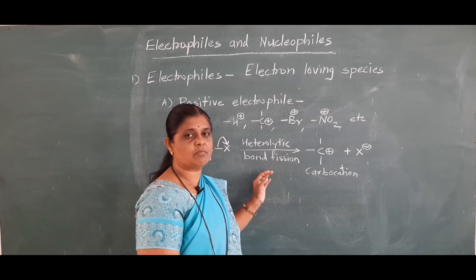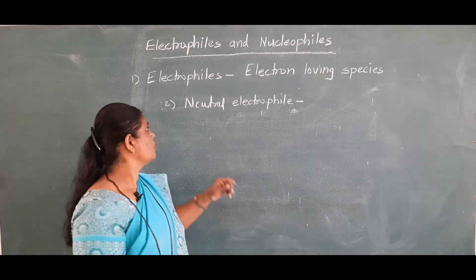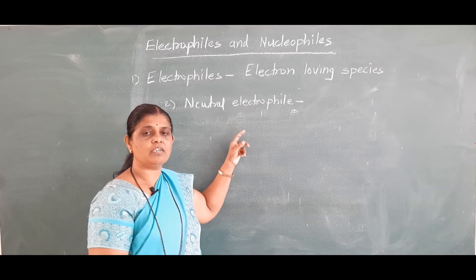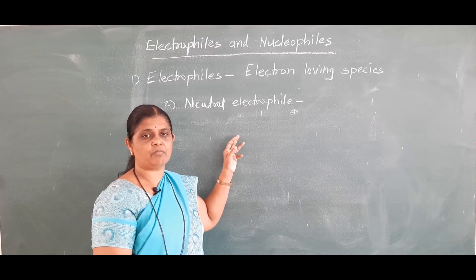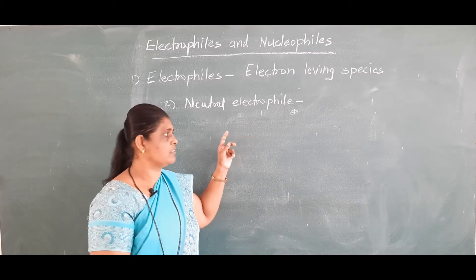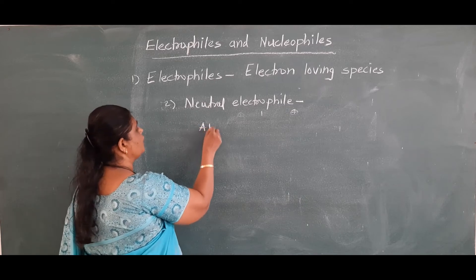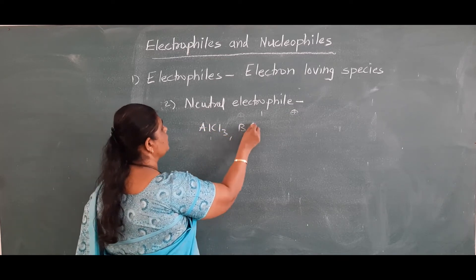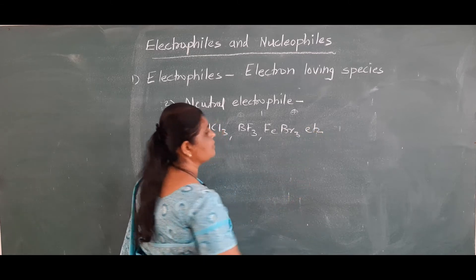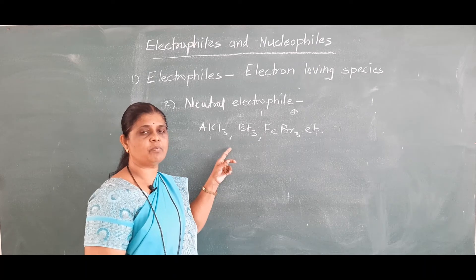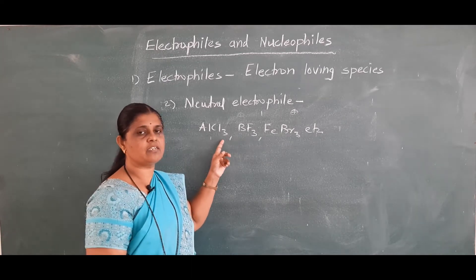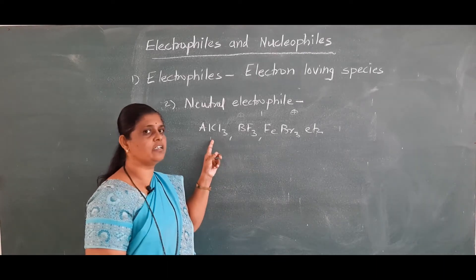Now we see what is meant by neutral electrophiles. Neutral electrophiles are electron deficient compounds. They have deficiency of electron pair, but they do not carry positive charge. Such type of electrophiles are known as neutral electrophiles. For example, AlCl₃ (aluminum chloride), BF₃, PBr₃, etc. These are Lewis acids which have deficiency of electrons, and those molecules have the tendency to accept electrons. Such electrophiles are known as neutral electrophiles.